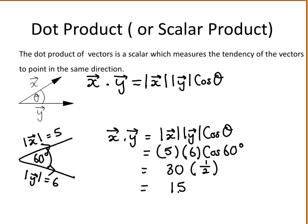So the result of a dot product is a scalar — it's just a number. It is not a vector.